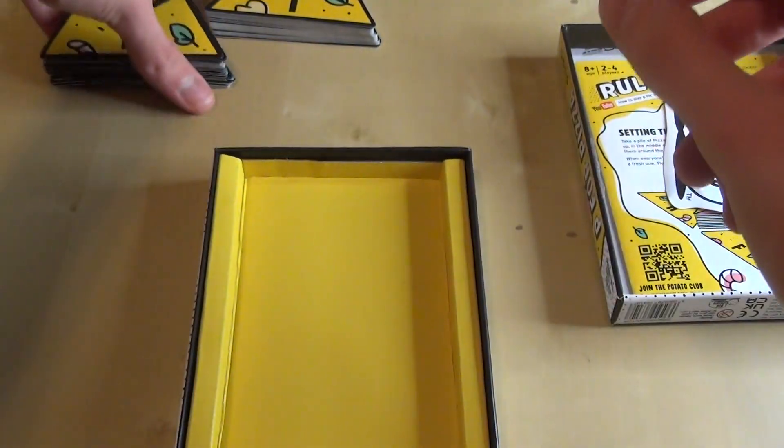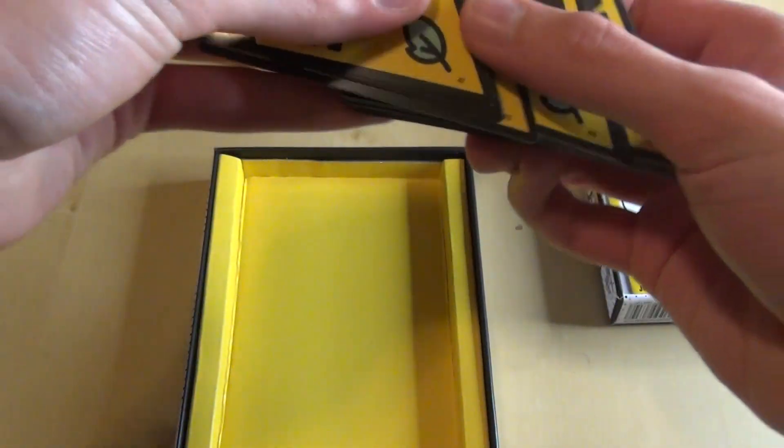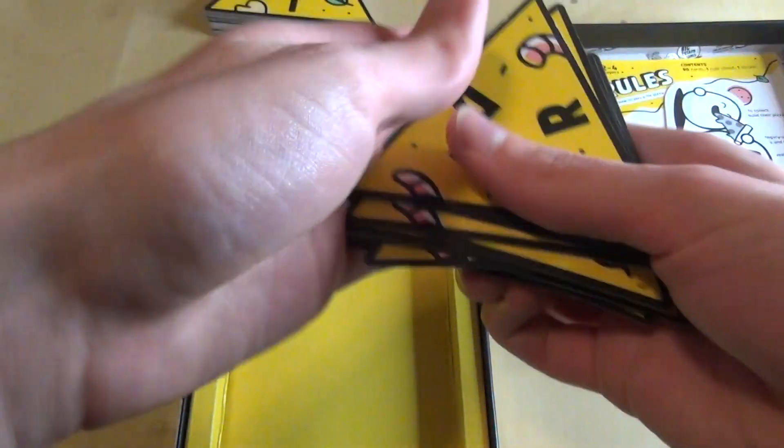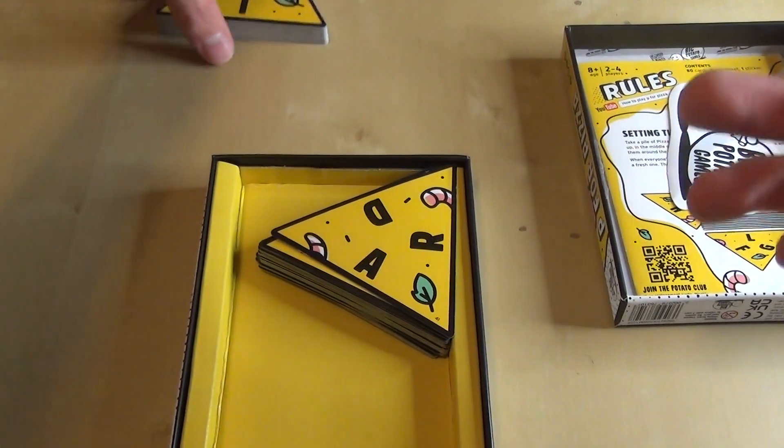Okay, so then we're going to put these pizza slices back. Oh, they're all numbered, that's nice. I didn't even know they all had numbers. Okay, so let me put this back.